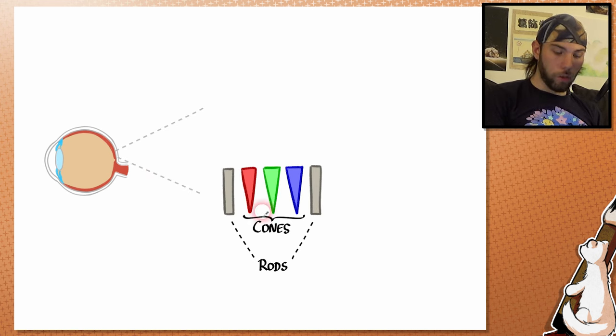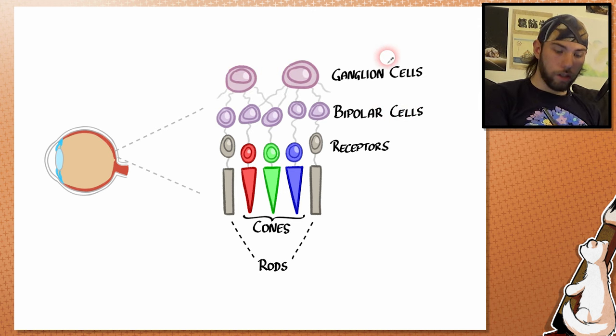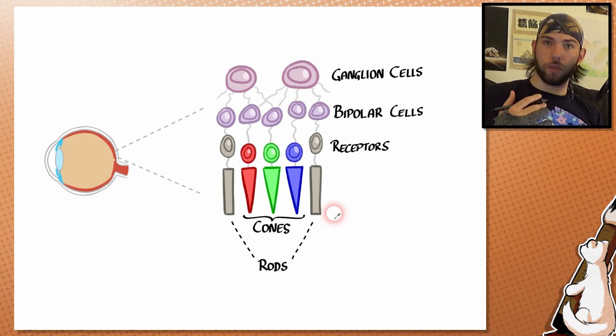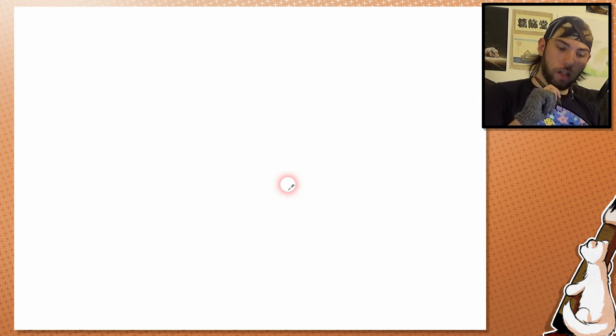We have here the cones and the rods. And above them the receptors, the bipolar cells and the ganglion cells, which collect the light pretty much. And we have less ganglion cells than cones and rods, so they are summarized. The cones are there for colors and details. And the rods, which are not that good with details and cannot see colors, are very good for dark situations. And we have three types of cones: red, green and blue. And the combination of these three makes it possible for us to see all of the colors.